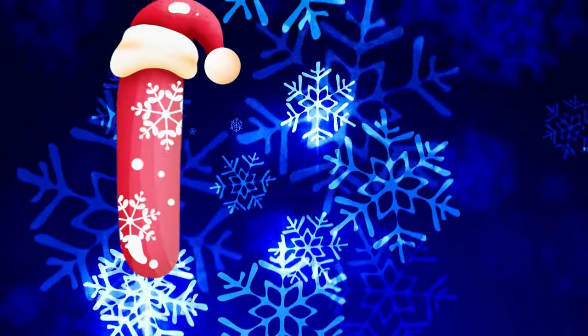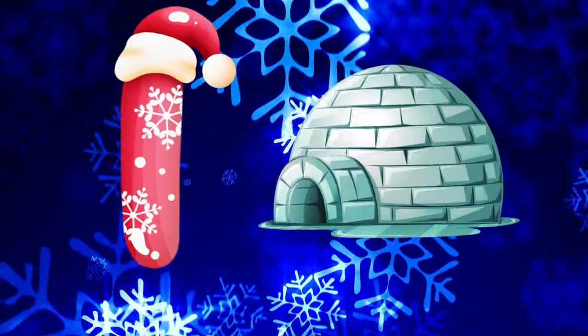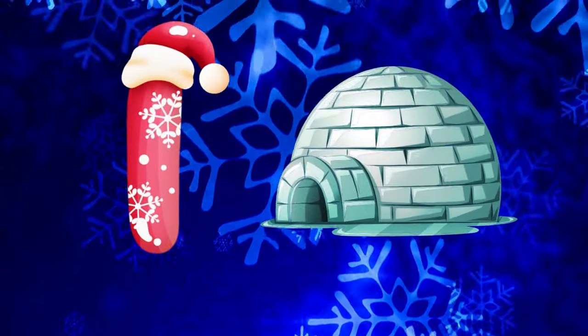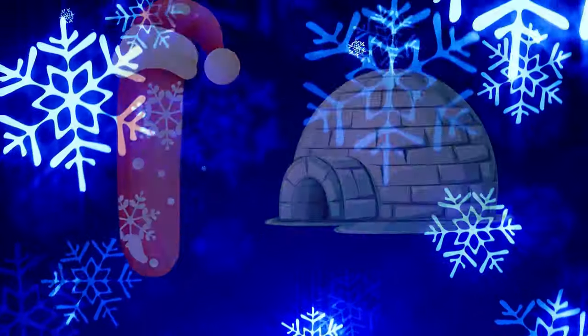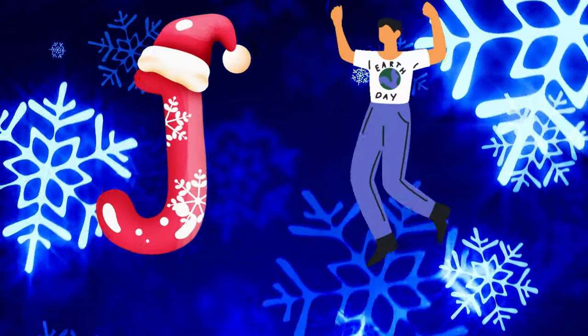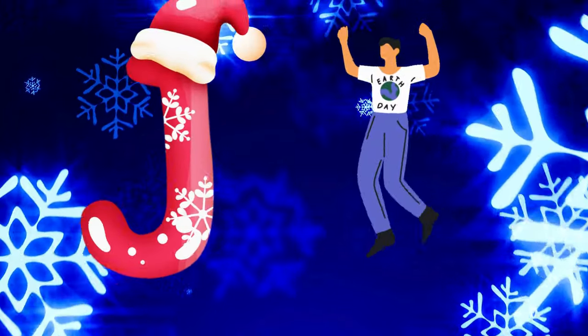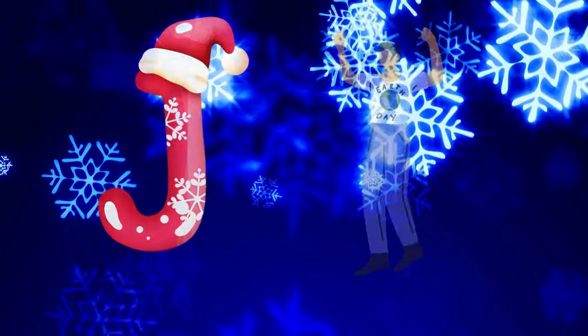I is for igloo, i-i-igloo. J is for jump, j-j-jump.